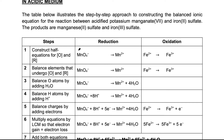Step 1: knowing that manganate 7 is reduced to manganese 2, this is our reduction half equation, and iron 2 is oxidized to iron 3 ion. We first balance the elements that undergo oxidation and reduction. Here I have one manganese on both sides and one iron on both sides, so this step is done.